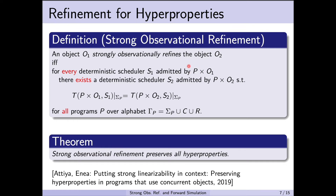there exists a deterministic scheduler S2 admitted by p cross O2, such that the traces of p cross O1 allowed by S1, when restricted to the actions of the client program, equal the traces of p cross O2 as allowed by S2, again considering only program actions. This must hold for all programs p over the alphabet gamma p, comprising the internal actions of the program as well as the calls and returns to the client object. Atia and Enea show that strong observational refinement is enough to preserve all hyperproperties of the abstract system.